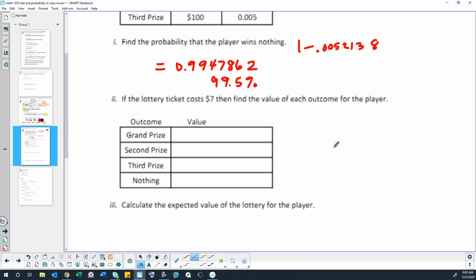So if the lottery ticket costs $7, then find the value of each outcome for the player. So if you pay $7 for a lottery ticket, then you are in the hole $7. You paid $7 for the lottery ticket.